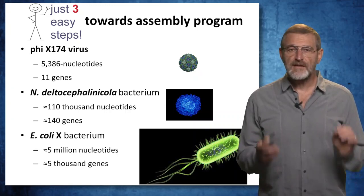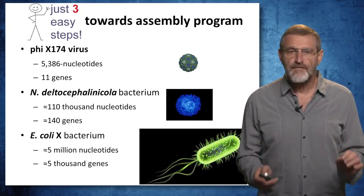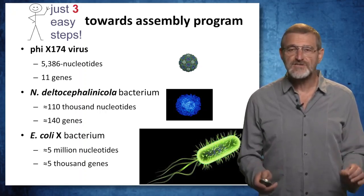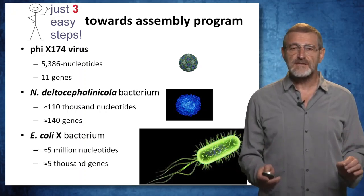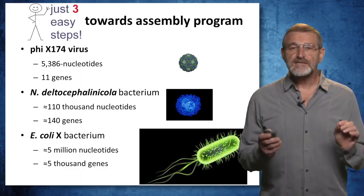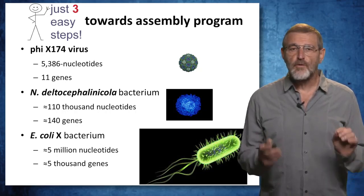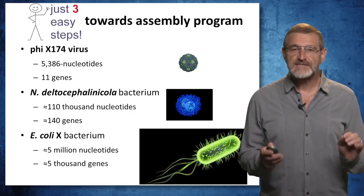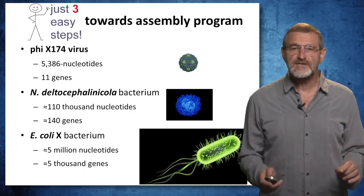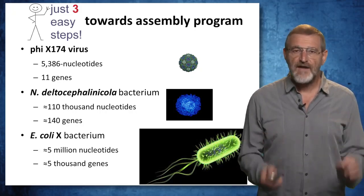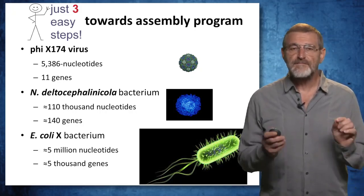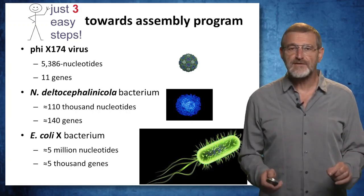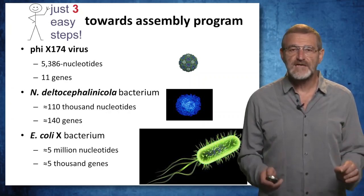We start from assembling the φX174 virus, which is a small, little over 5,000 nucleotide virus with just 11 genes. Afterwards, we will assemble the smallest bacterial genome known, called Nasuia deltocephalinicola, with just 110,000 nucleotides and approximately 140 genes. And finally, we will assemble the 50 times larger E. coli X bacteria, which has roughly 5 million nucleotides and approximately 5,000 genes.